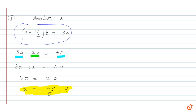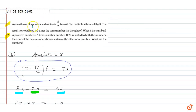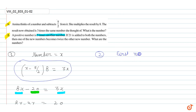Now we will solve the second question. A positive number is 5 times another number. If 21 is added to both numbers, then one of the new numbers becomes twice the other new number. What are the numbers?